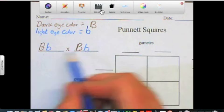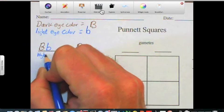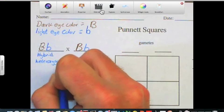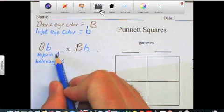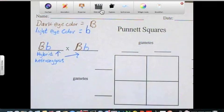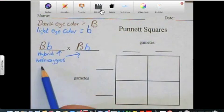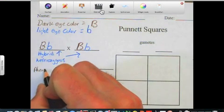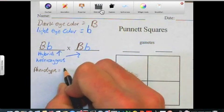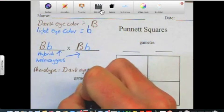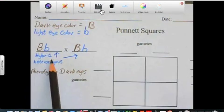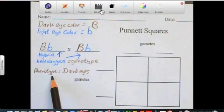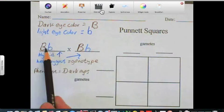Now, this is going to be a hybrid or heterozygous genotype for both of them. And their phenotype is going to be brown eyes or dark eyes. Okay. So genotype is hybrid, the genotype. And phenotype is the physical characteristic, that's dark eyes. Both parents are hybrid genotypes or heterozygous, and their phenotype is for dark eyes.